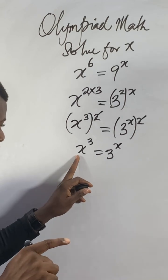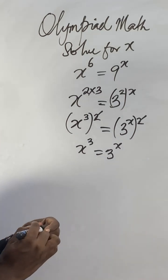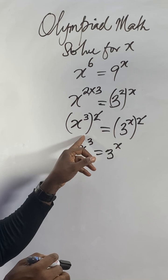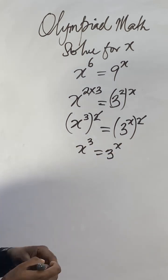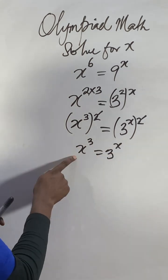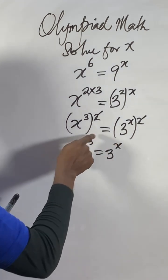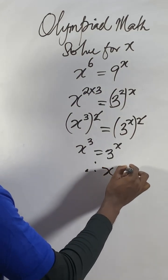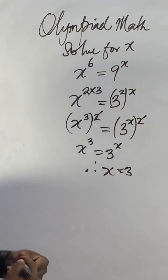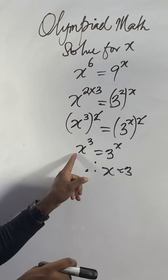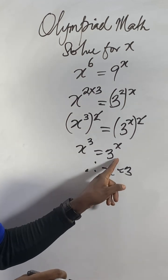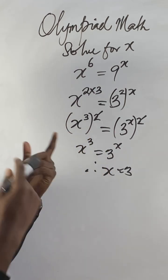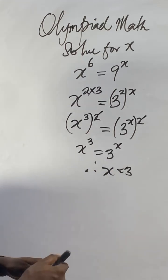You see the base equal to three, the power three equal — so x equals three. Anytime we say the base x equals three, the power three equals x — it's the same thing as x equals three. Just keep one of them as the answer.